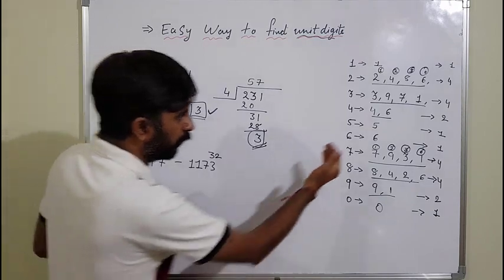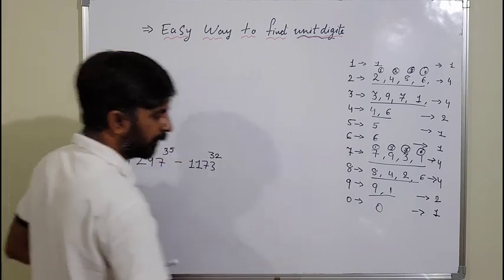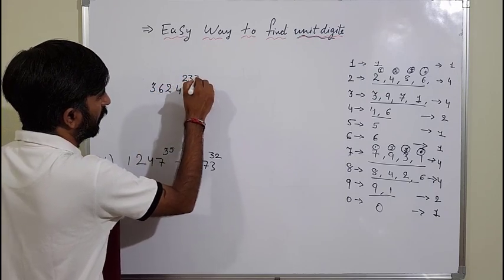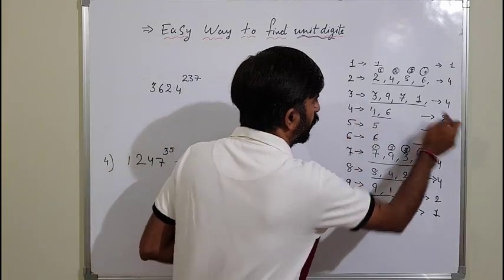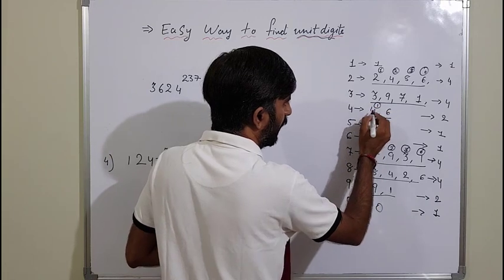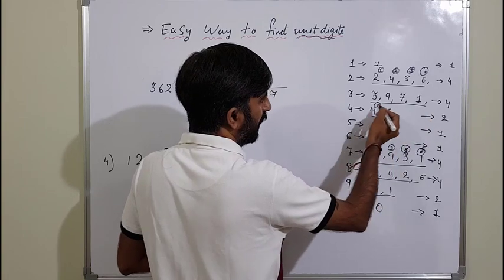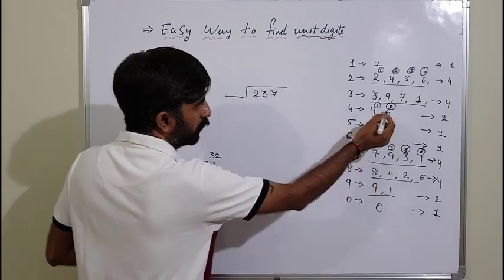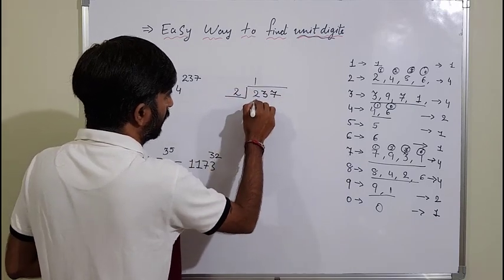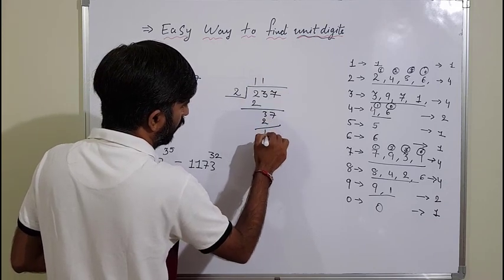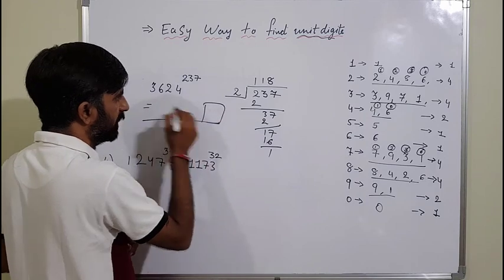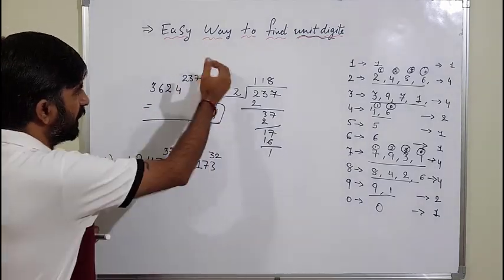Now let's do an example for 4. Take 3624 raised to 237. The last digit is 4, so there are 2 possibilities — divide the power by 2. If remainder is 1, answer is 4; if remainder is 0, answer is 6. Dividing 237 by 2: remainder is 1. So the unit digit of the answer is 4.